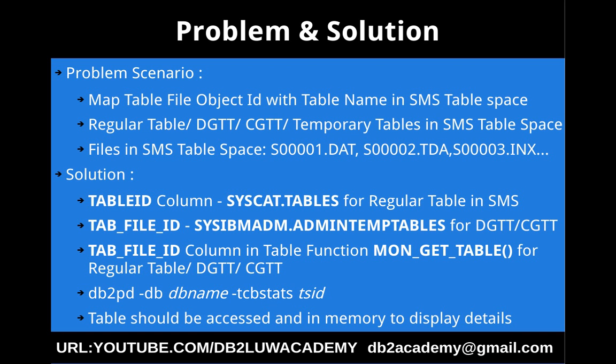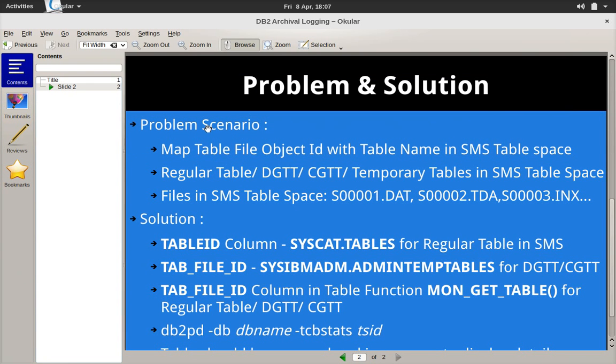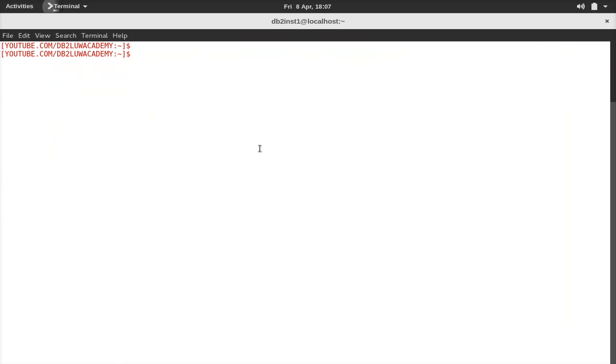Similarly, you can use the admin temp tables administration view in schema SYSIBMADM if it is a DGTT or CGTT table. There is a column tab_file_id, and similarly the tab_file_id column is available in the MON_GET_TABLE function also — you can use this for regular tables, DGTT, and CGTT. Since it's a monitoring routine, the table should be available in memory to display the details. You can also use the db2pd command: db2pd -db <dbname> -tcbstats with the corresponding tablespace ID.